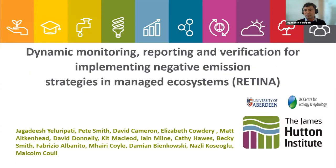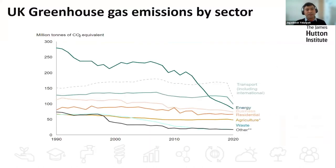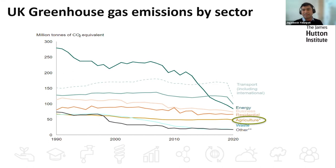I'd like to share my presentation to give an overview of the project. RETINA focuses on developing a digital monitoring, verification, and reporting system. To give background: UK greenhouse gas emissions by sector from 1990 to 2020 show substantial reductions in some sectors, especially energy with the focus on renewables. However, the agriculture sector has remained almost flat, meaning there is huge potential for reduction and yet little progress has been made.